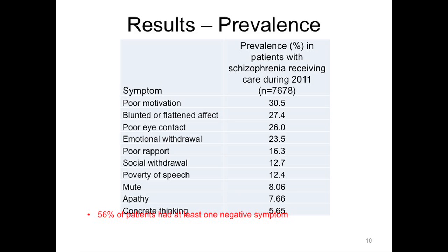It was a success. We were able to develop an automatic tool to extract these negative symptoms with a high degree of precision — over 80%. These symptoms are quite common, particularly poor motivation and blunted or flattened affect. Fifty-six percent of patients had at least one symptom documented, which is more than we anticipated.